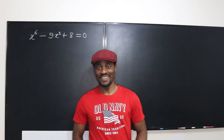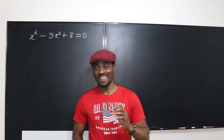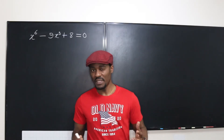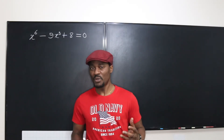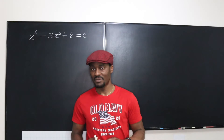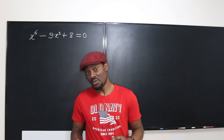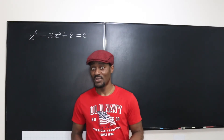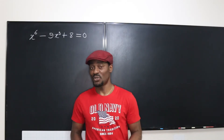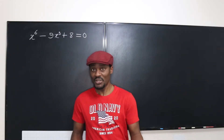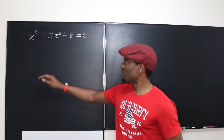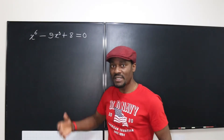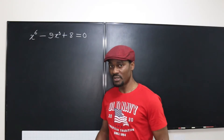Hello and welcome to another video. According to the fundamental theorem of algebra, if you solve a linear equation, you're supposed to get one solution — most of the time. If you solve a quadratic equation, you're supposed to get two solutions. If you solve a cubic equation, you're supposed to get three solutions. So if you solve a sixth-degree polynomial equation, you expect to get six solutions.